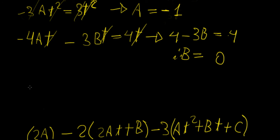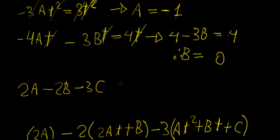Finally we're going to find c. For c we just group the constants together: 2a minus 2b minus 3c equals minus 5. We already found a and b, so we can substitute them in, and c is going to become 1.